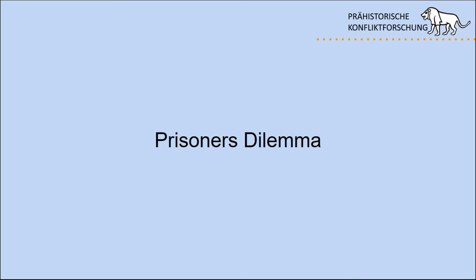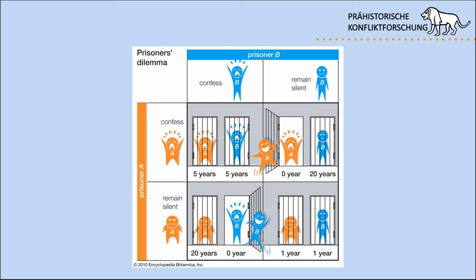To model this I use the Prisoner's Dilemma from Game Theory. In the classical setup, two people who robbed a bank are placed in separate cells with several options. Both could confess and receive a five-year sentence each. One could remain silent while the other confesses, giving the silent one a 20-year sentence. Last but not least, both could remain silent and each receive only a one-year term, since it cannot be determined who actually held the weapon during the robbery.